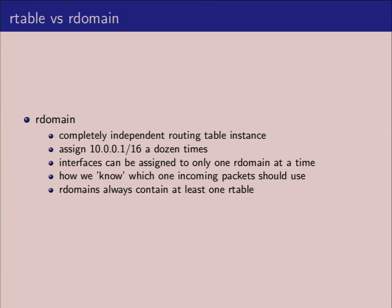A routing domain always contains at least one routing table. For most people, they're going to do policy-based routing only within one routing domain. It's not common to mix both in a production environment.